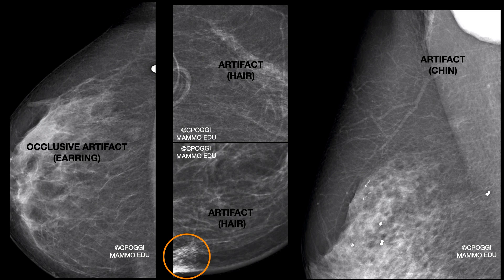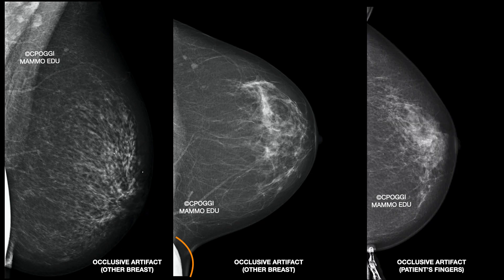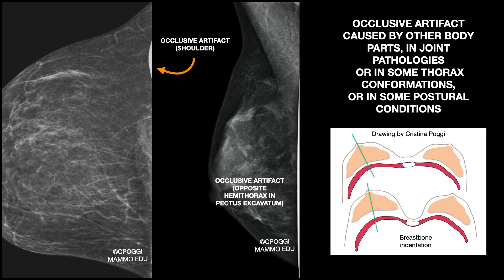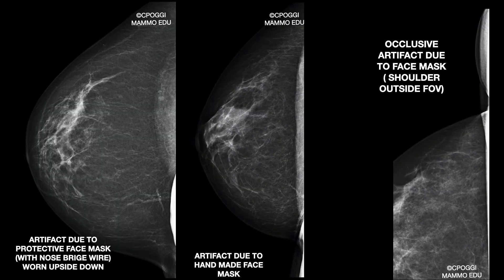Occlusive artifacts result from objects or body parts projecting themselves onto the breast: earrings, hair, chin. We have to check carefully for any shadow projecting onto the field of view. It could be the other breast too, which should be kept away by the patient herself — or even the patient's finger. Some occlusive artifacts are correlated to patient joint pathologies or, in a healthy patient, to their thoracic conformation — for example, an artifact due to the opposite hemithorax in a case of pectus excavatum. We also have a brand new artifact in mammography due to a face protection mask worn upside down with the nose bridge wire on the chin.